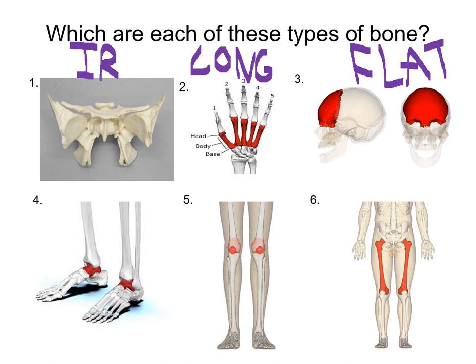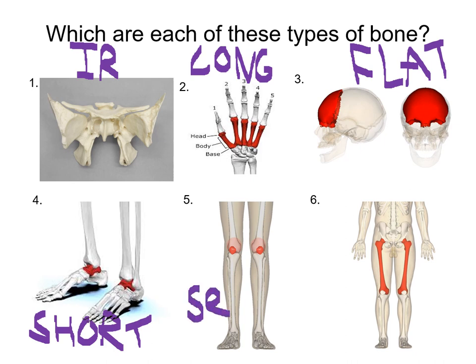Number four — what bone are we looking at near the ankle joint? We're looking at the talus bone. The talus, along with the calcaneus, navicular, cuboid, and all these other tarsal bones, are very short — cube-like and triangular-like. Anything in the wrist or ankle falls under the short bone category. Number five, we're looking at the patella. Remember, this is the unique exception — it's not considered irregular. Because it develops later in life, embedded in that tendon, we call it a sesamoid bone. The patella is that really unique bone.